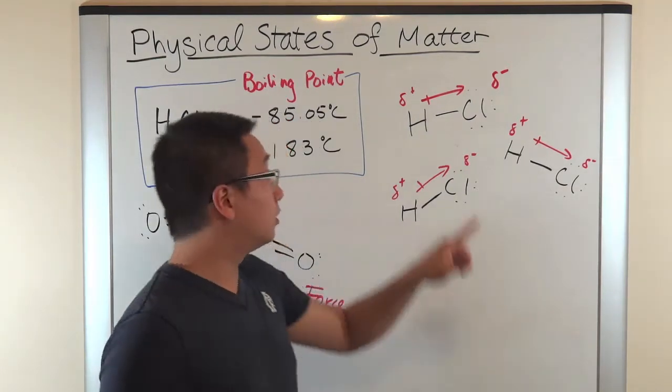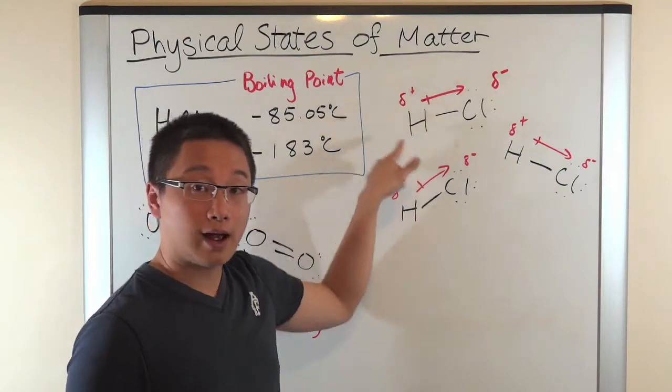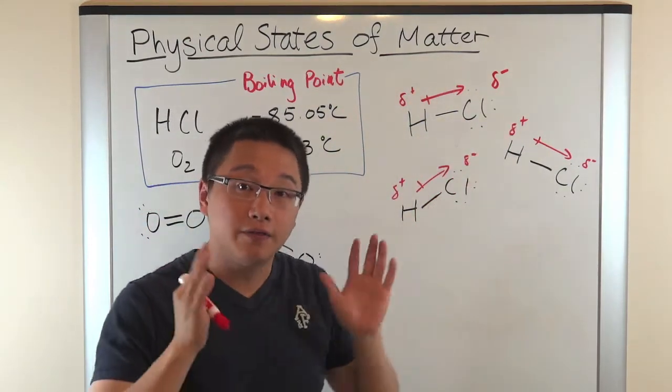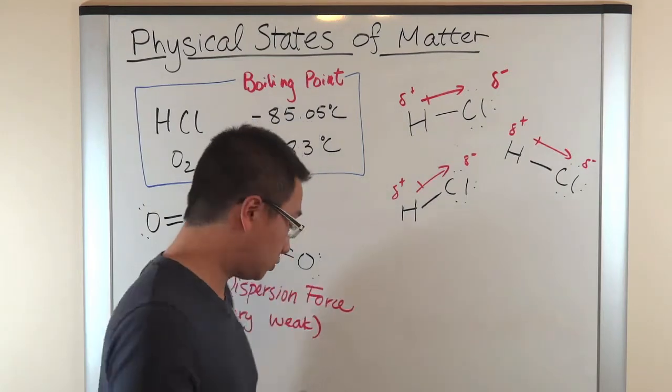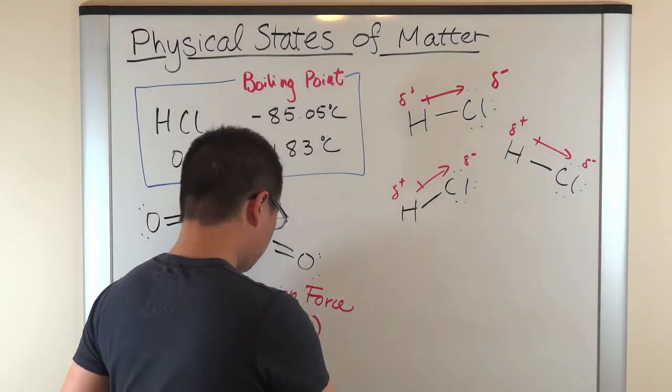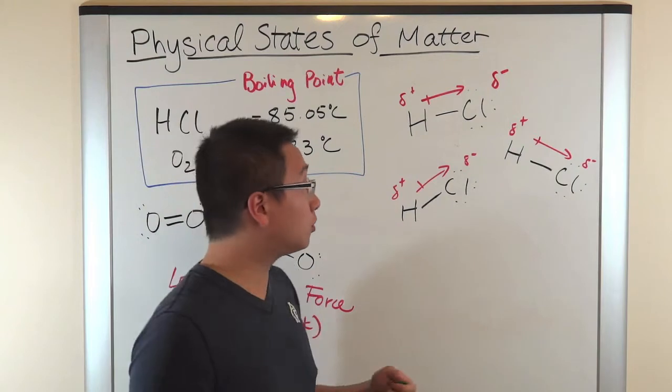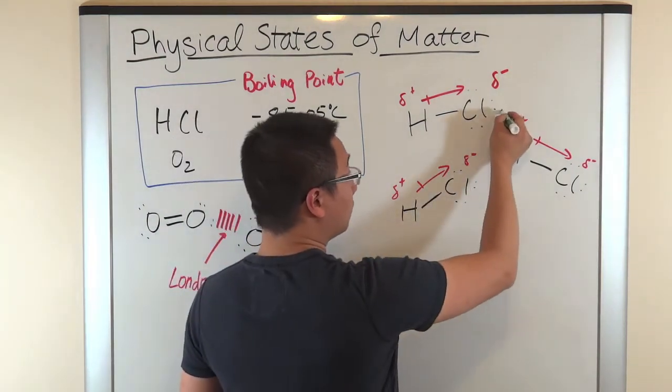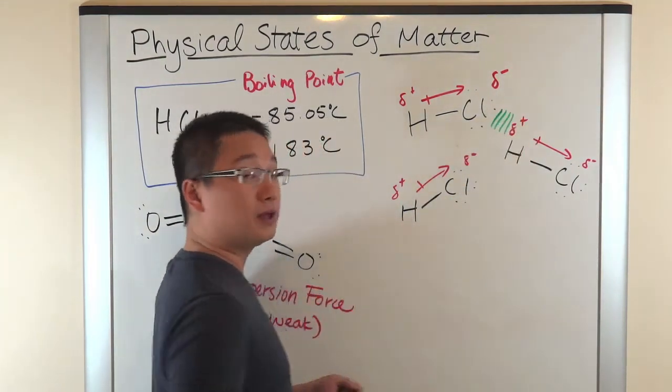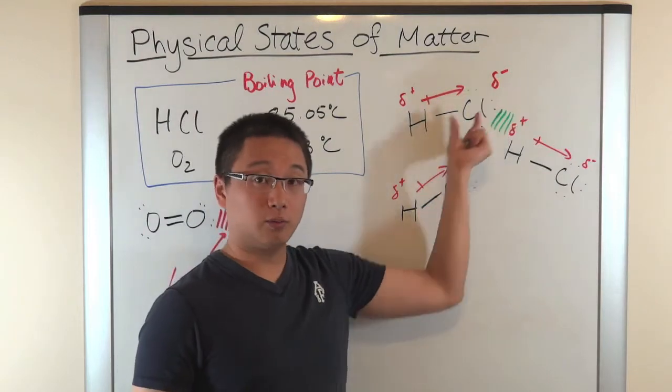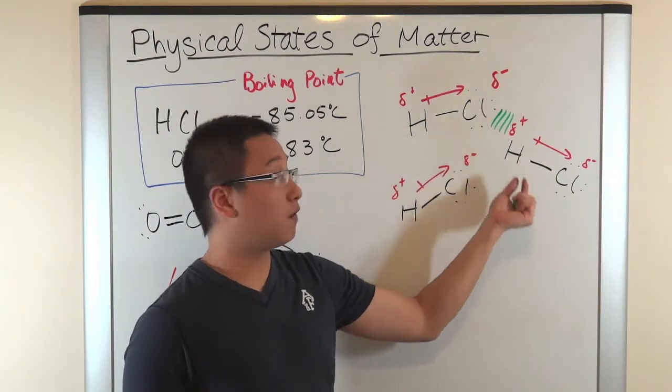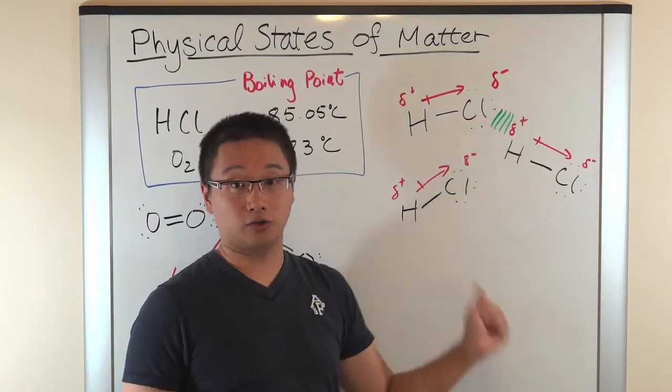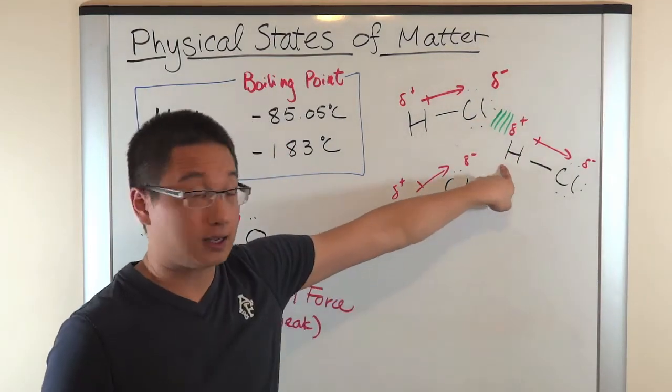And we have two poles, the positive pole and the negative pole. And these poles are going to attract each other when they're close to each other. So, I'm going to use a green marker to show that, well, the negative end of the molecule, which is the chlorine end of the molecule, it's going to attract with the positive end of the hydrogen chloride, which is the hydrogen end right here.